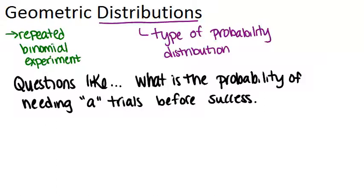We have a formula that will help us figure out this type of probability. The probability of needing a trials before having a success means you actually fail a minus one times and then on the ath time you succeed. So the probability of a trials before success will be q, the probability of failure,